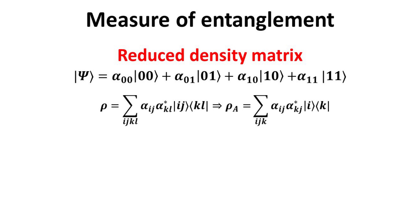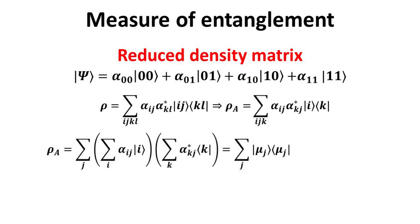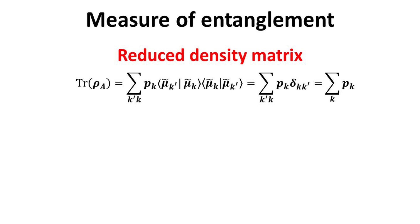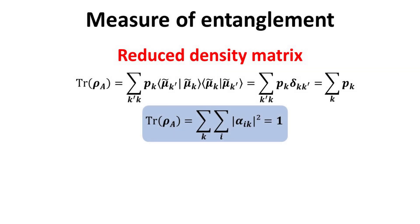The reduced density matrix rho_A is then obtained by tracing over the Hilbert space of B only. This collapses the outer product between the j and l kets with indices j equal to l. Thus, rho_A is 2×2, in contrast to rho which is 4×4. We can recast rho_A in terms of outer products of mu kets, and further pull out the factor p_j so that the mu kets are normalized. It is apparent that p_j, given by the modulus square of two of the alpha amplitudes, must be between zero and one. It is straightforward to show that the trace of rho_A equals the sum of all p_k, which with the alpha coefficients gives trace of rho_A equal to unity — rho_A is normalized.